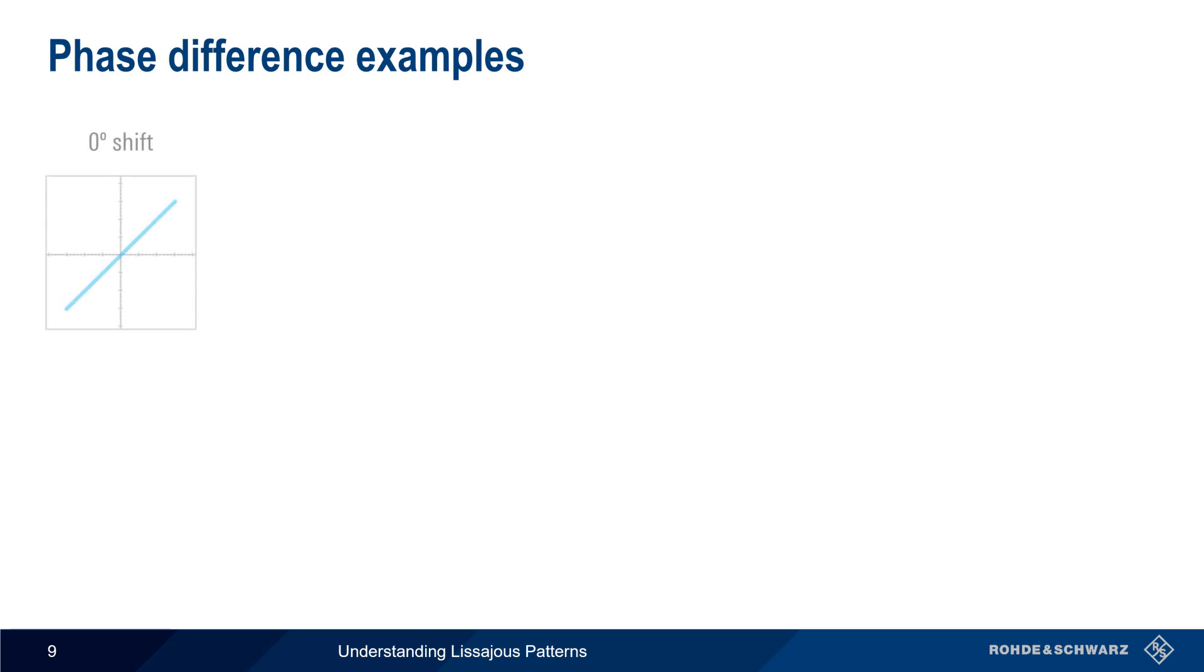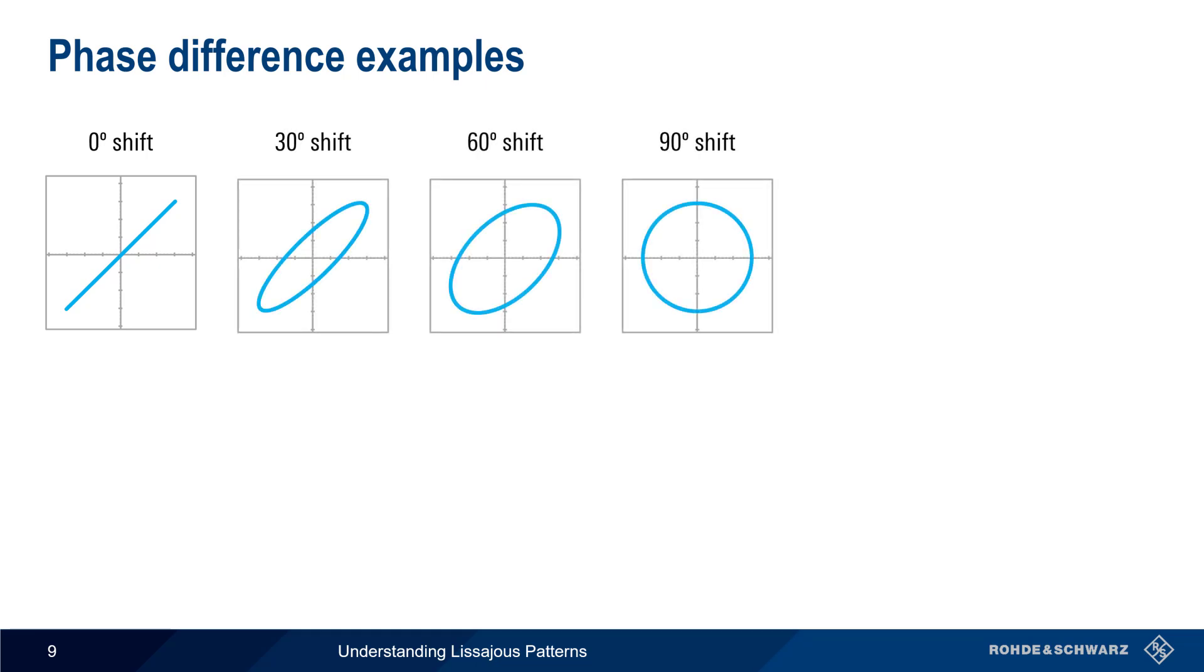We've already seen that a zero-degree phase shift results in a straight line with a positive slope. As the amount of phase shift increases, this line becomes an oval, which gets wider until turning into a circle at a phase offset of 90 degrees.